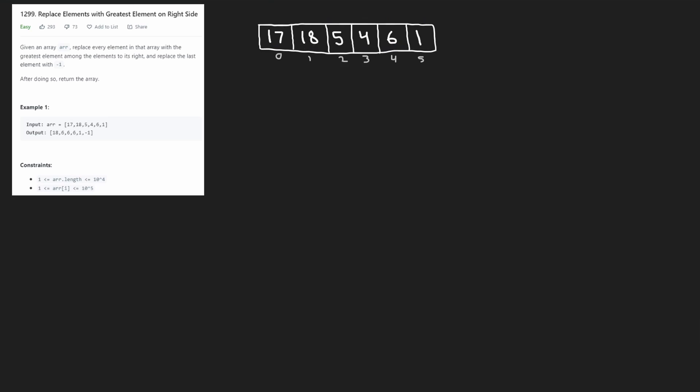Let's solve LeetCode 1299: replace elements with the greatest element on the right side. We're given an array and we want to take each element — for example 17 — and replace it with the greatest element on the right side of it. So we scan through 18, 5, 4, 6, and 1. The greatest one is 18, so we replace 17 with 18.